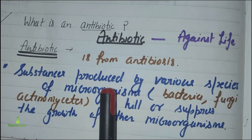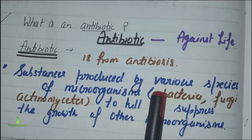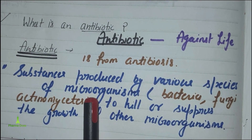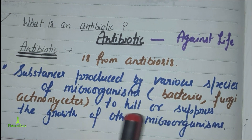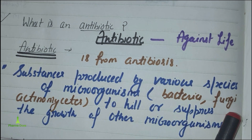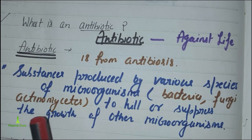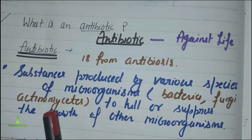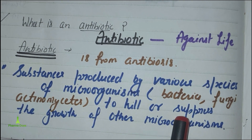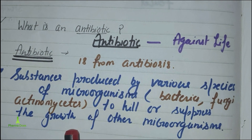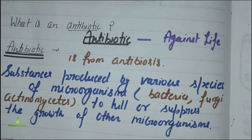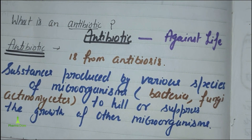Antibiotics are substances produced by various species of microorganisms — for example, bacteria, fungi, and actinomyces — to kill and suppress the growth of other microorganisms.